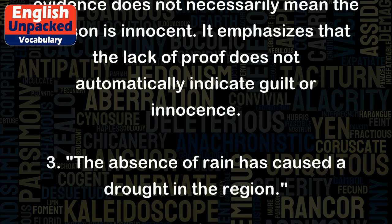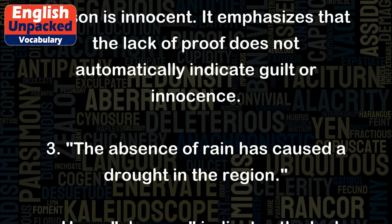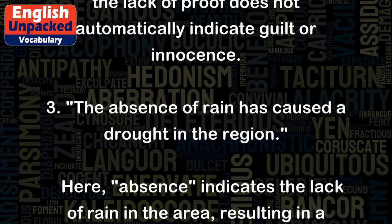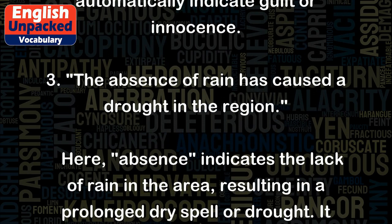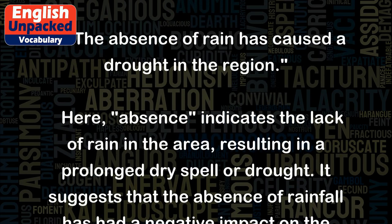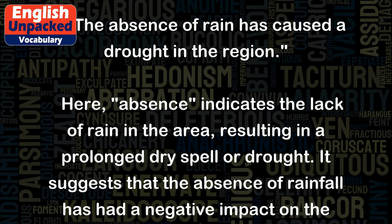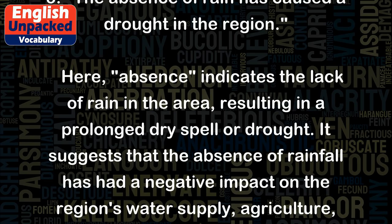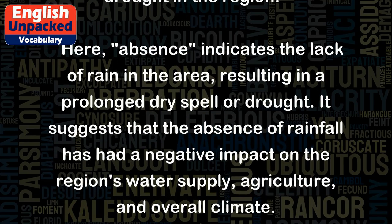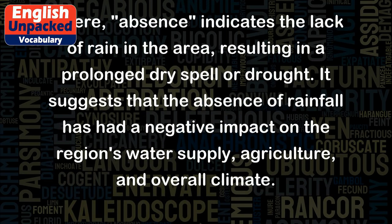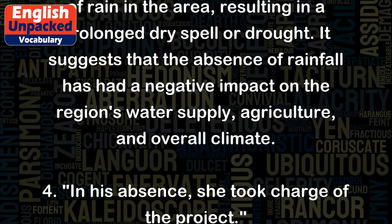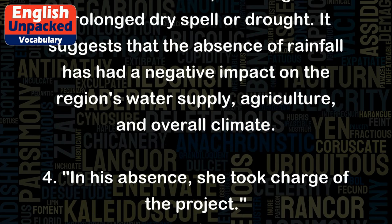Three: The absence of rain has caused a drought in the region. Here, absence indicates the lack of rain in the area, resulting in a prolonged dry spell or drought. It suggests that the absence of rainfall has had a negative impact on the region's water supply, agriculture, and overall climate.